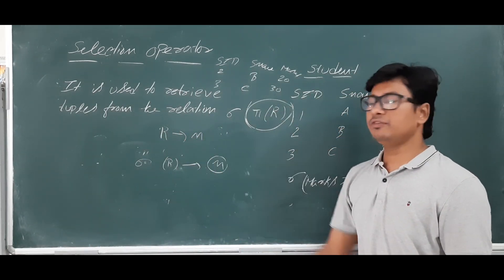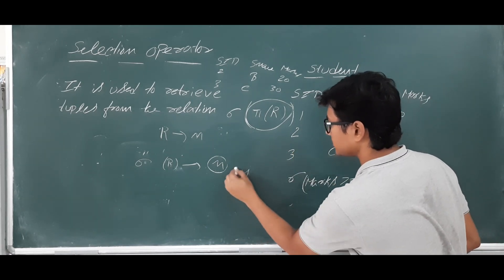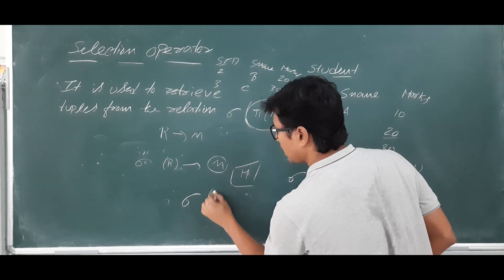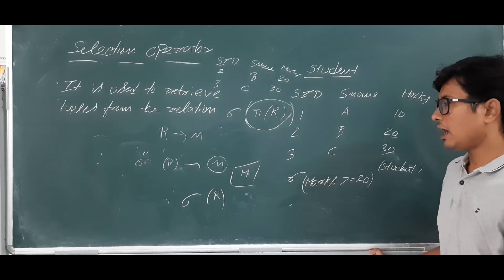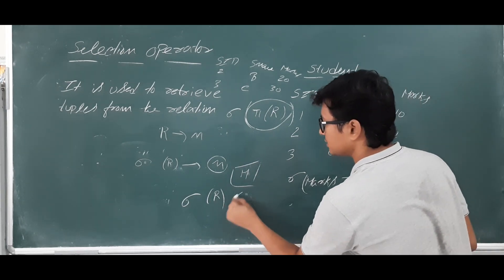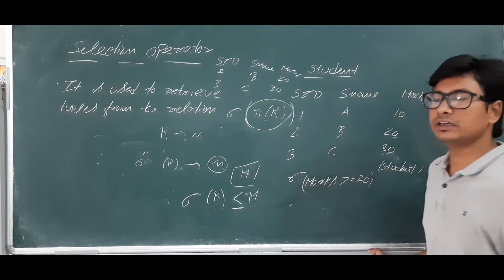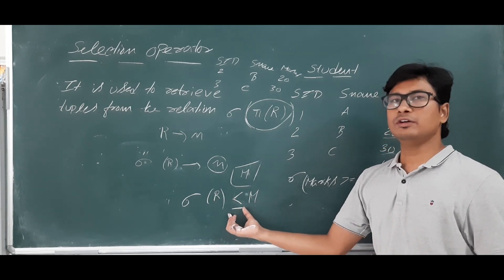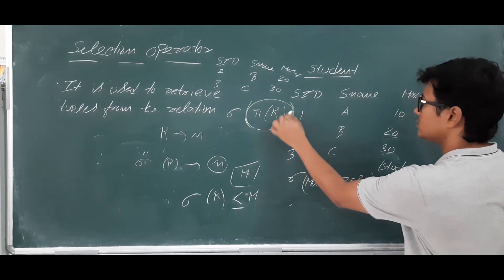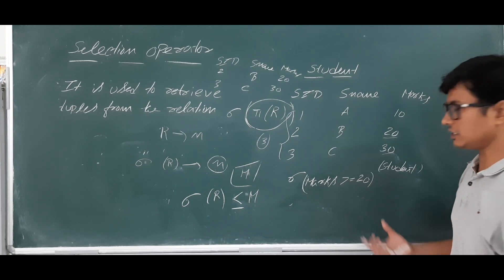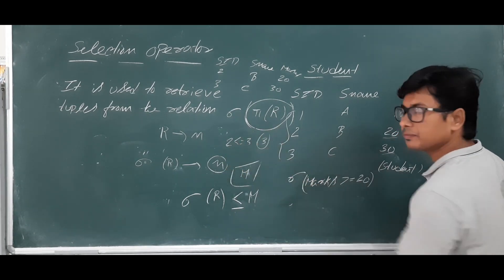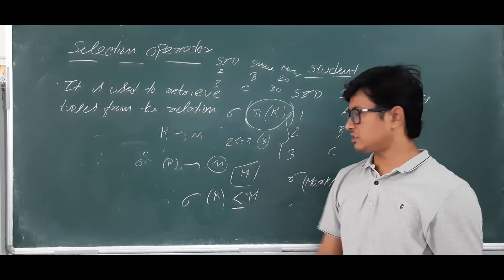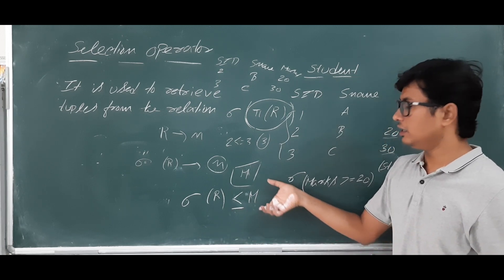Now for cardinality: if the relation has n number of tuples and you apply the selection operator, you will retrieve some number of tuples that is less than or equal to n. For example, if we have three tuples and after applying the selection condition we retrieve two, then two is less than or equal to three. If no condition is applied, all three tuples are retrieved. So the degree does not change, but the cardinality will be less than or equal to that of the original relation R.